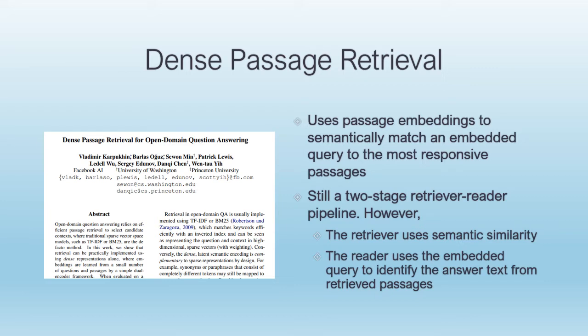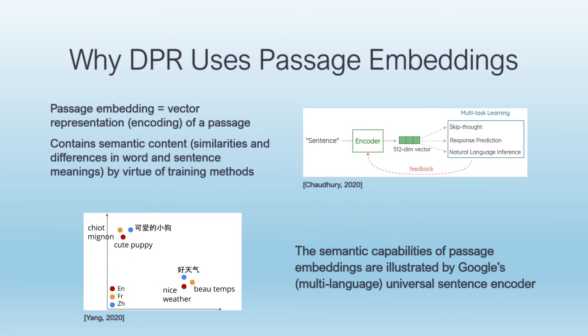The most important paper in the field right now is Dense Passage Retrieval for Open Domain Question Answering by Karpukhin and his collaborators. Dense passage retrieval uses passage embeddings to identify the most responsive passages to a query, then pipelines those passages to the reader, just as in previous retriever-reader designs. The key differences are that passage embedding facilitates semantic search, and the query embedding is passed to the reader for its use in identifying the most responsive text spans.